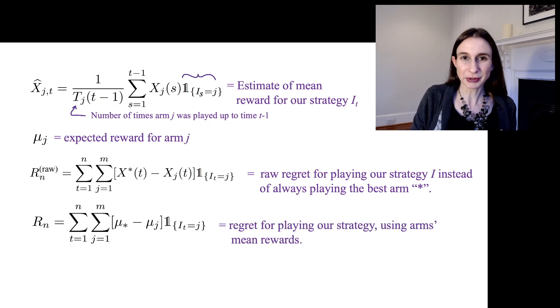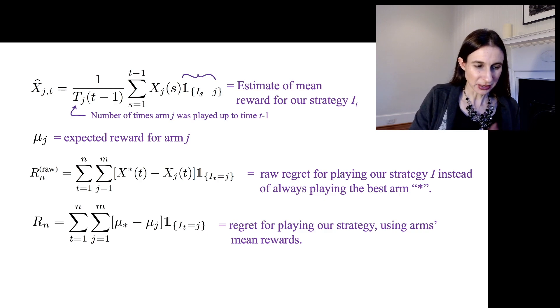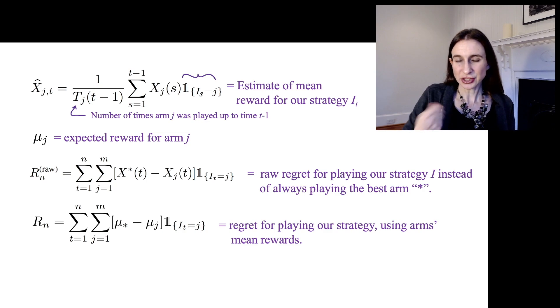It uses a regret that's defined slightly differently, which is instead of using what we actually got when we chose the arm, it uses the mean of that arm. So it uses the difference between μ star and μ_j each time we play arm j.